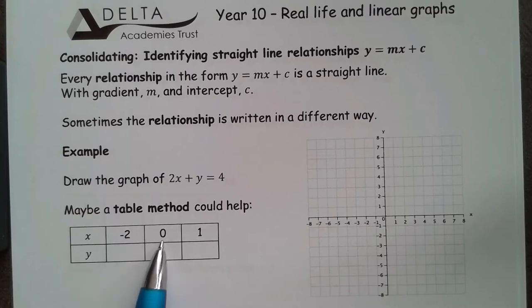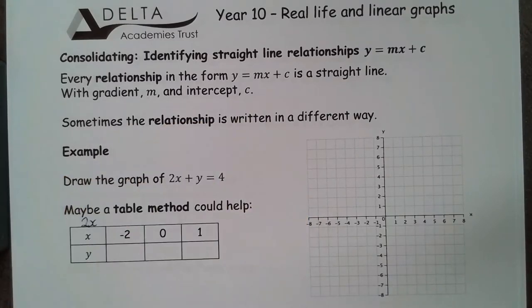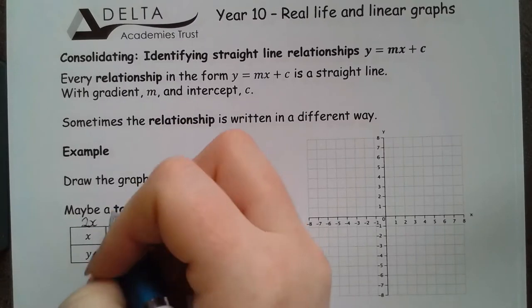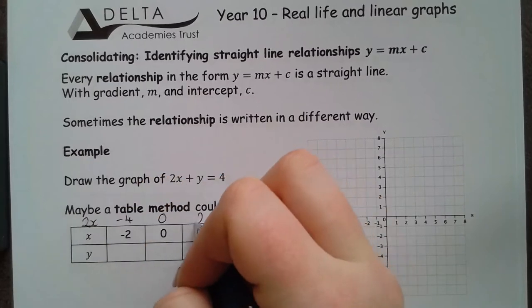A positive, a negative and then that 0 to see what happens either side. And then all I'm going to do to make this a little bit easier for myself is add an extra row of 2x. If I double this x, I get negative 4, 0 and 2.